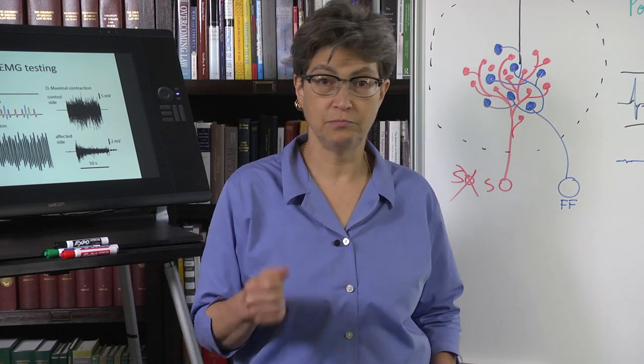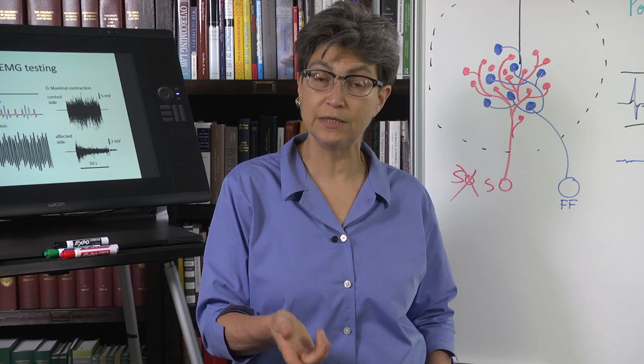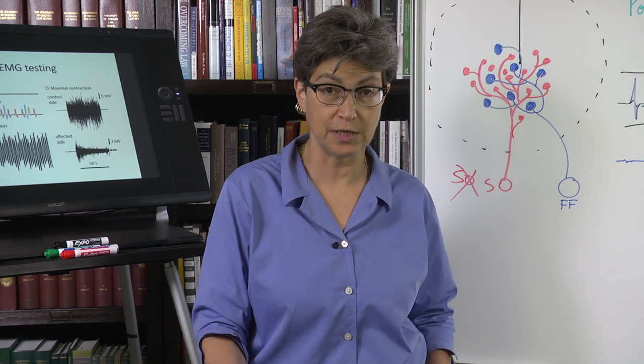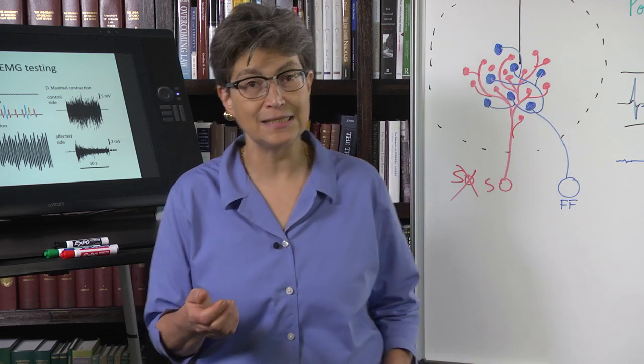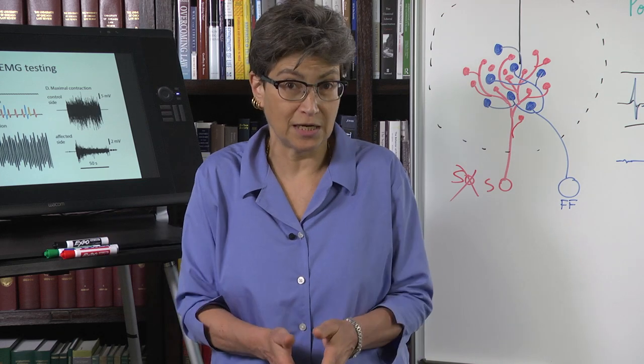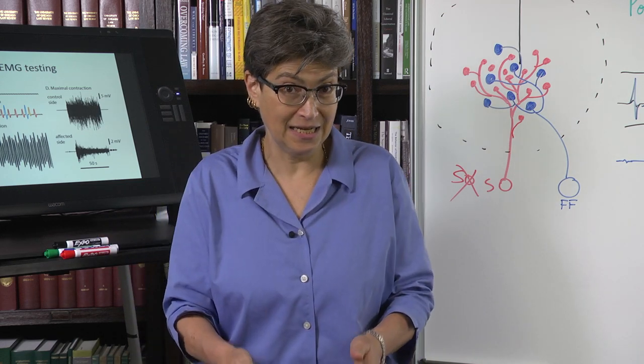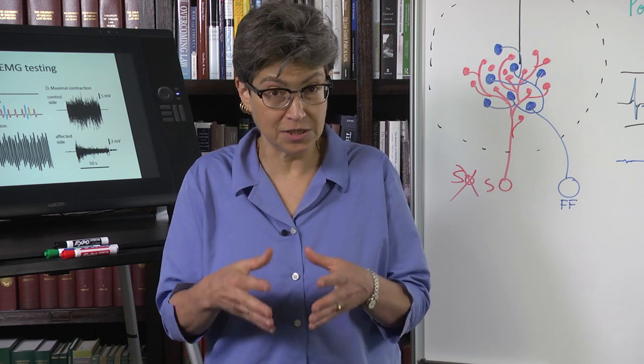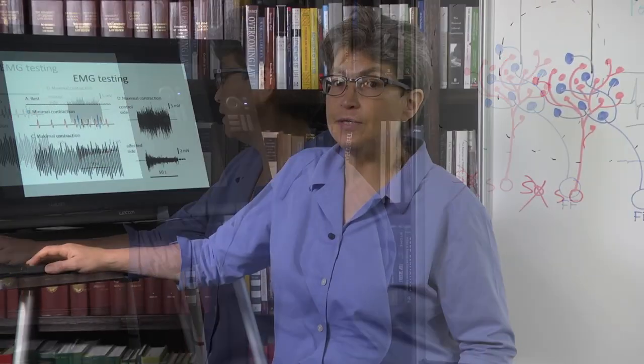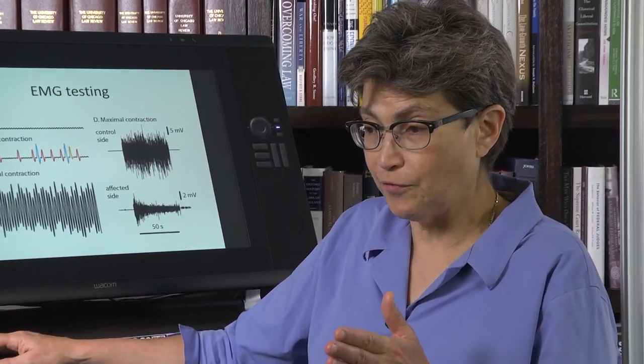It is not visible. One muscle fiber is not visible. One motor unit is visible. The contraction of one motor unit is visible. The contraction of one muscle fiber is not. And because it's not detectable visibly, it is only detectable through EMG testing. So it is a clinical sign that you can detect, but you're not going to see without looking for it. These have two different, very different meanings.